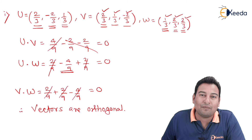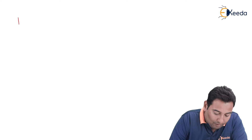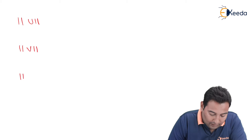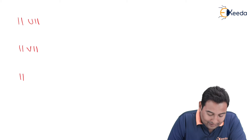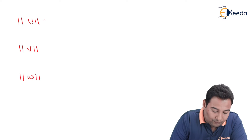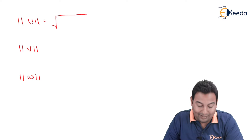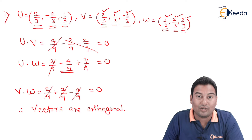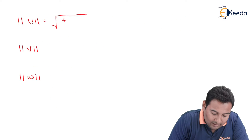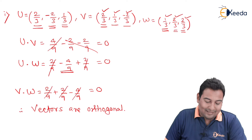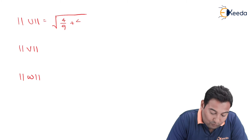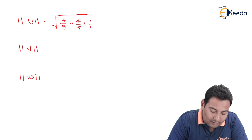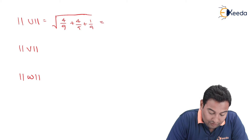We also need to check whether the set is orthonormal. For orthonormal, we need to find the norms. If the magnitude of each vector is unity, then the vectors are orthonormal. For u = (2/3, −2/3, 1/3): (2/3)² = 4/9, (−2/3)² = 4/9, (1/3)² = 1/9. That gives 9/9 which equals 1.